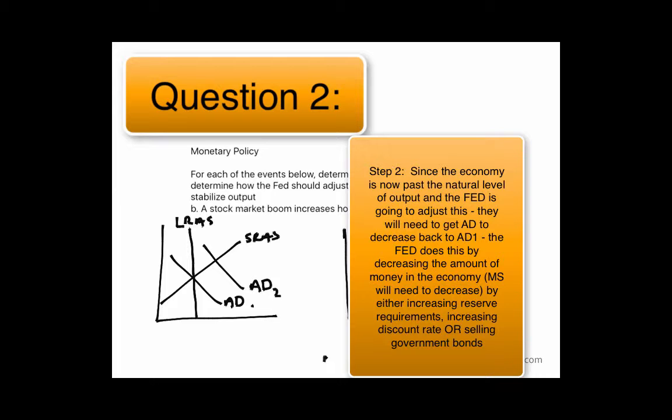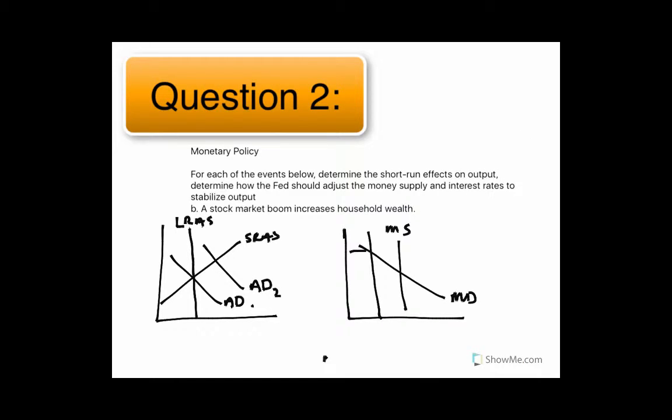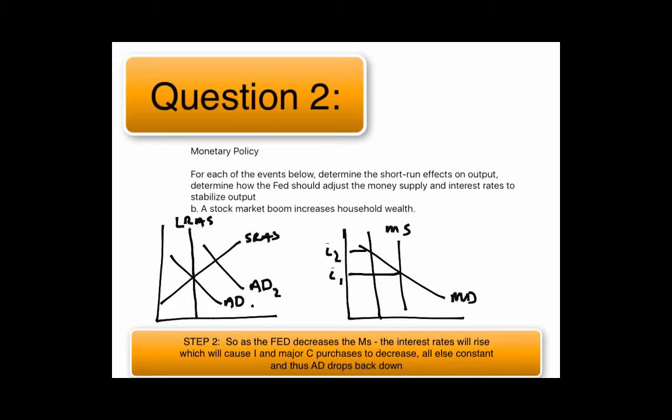the Federal Reserve could choose to decrease the money supply, which would increase interest rates from I1 to I2, which would decrease investment and move you back to this long-run curve where we were before.